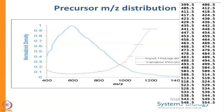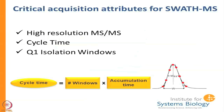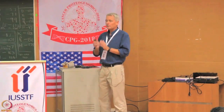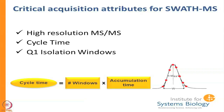Our SWATH setup uses 100 different windows, so you can imagine the machine has to be pretty fast to step over that. Because the output is so complicated you need a high resolution mass spectrometer — you need high resolution MS/MS or else you will have no way to really distinguish what you are seeing.